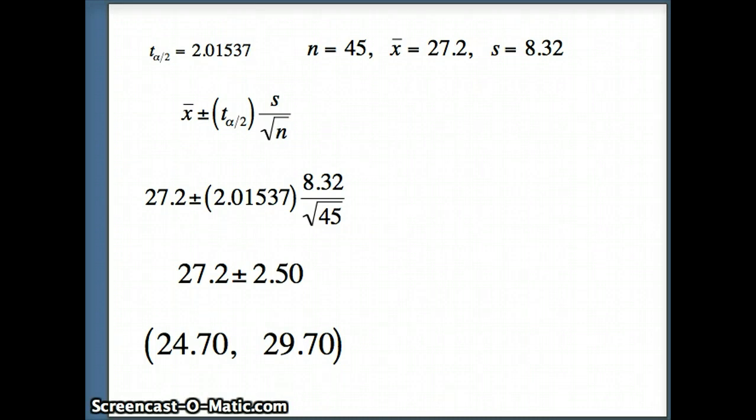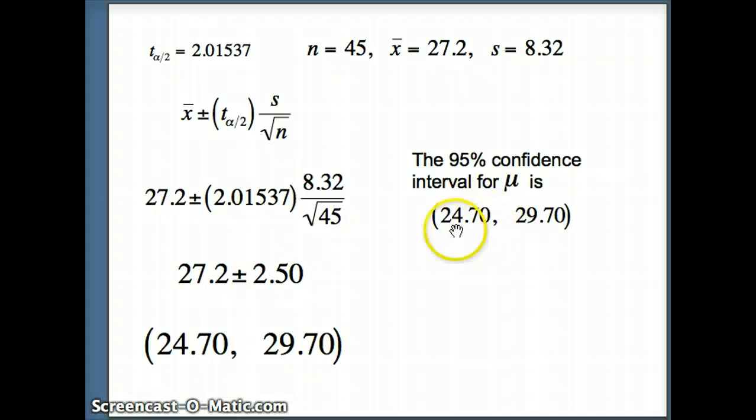So what do we say? We say the 95% confidence interval for mu is 24.7 to 29.7. Now let's remember what this means. I don't know what mu is. I can never know what mu is. My goal is to construct an interval that captures mu. Did that interval capture mu? The probability of that is 95%. So the probability is 95% that indeed that interval captured the population mean that we start with.